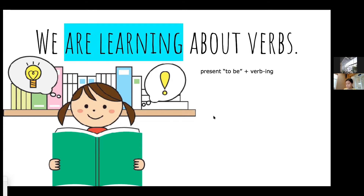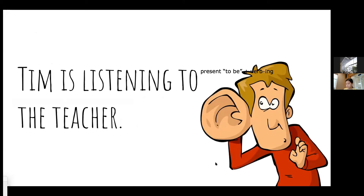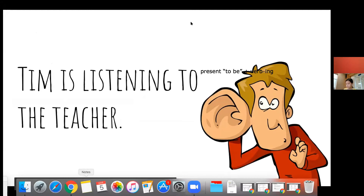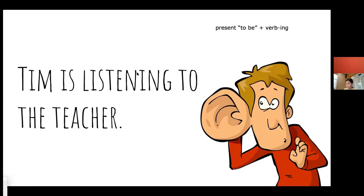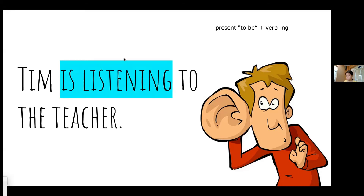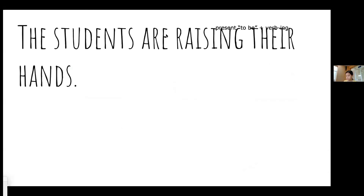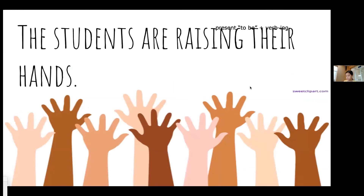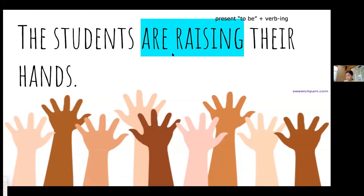The present progressive verb in 'We are learning about verbs' is 'are learning' — very good. Let's look at another one: 'Tim is listening to the teacher.' Who sees the present progressive verb? Type it into the chat. Remember, this is a two-part verb. 'Is listening' — 'is' is the form of the verb 'be,' and 'listening' is the verb with the '-ing' ending.